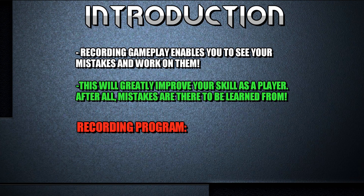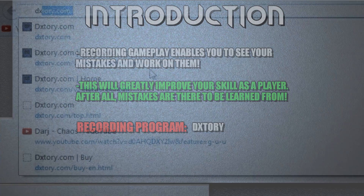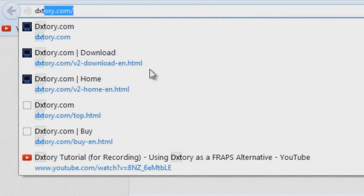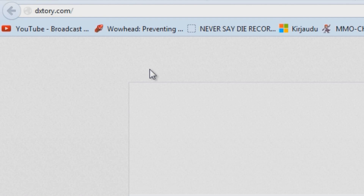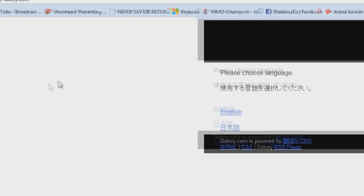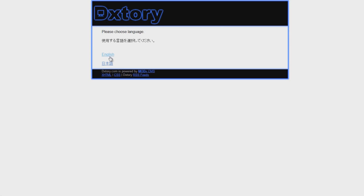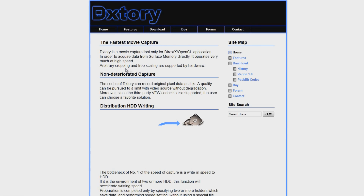For the recording program we're gonna be using Dxtory. I'll show you how to install it, set it up, and use it. The first thing you need to do is download Dxtory. You can buy Dxtory for $36, but it's also completely free to use with a watermark in the video.